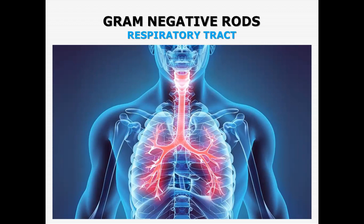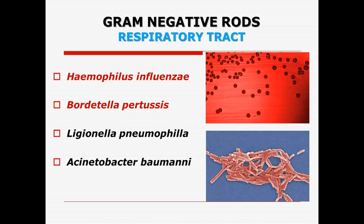For the gram-negative rods we classify them into facultative and aerobic anaerobes. Within the gram-negative rods we have some organisms which are present in the intestinal tract like Salmonella, Shigella, Serratia, and Proteus. We have some organisms which are zoonotic in nature — zoonotic meaning diseases transmissible from animals to humans, from wild or domestic animals like cattle, sheep, goat, dogs, or rabbits. There are also some organisms which affect the respiratory tract.